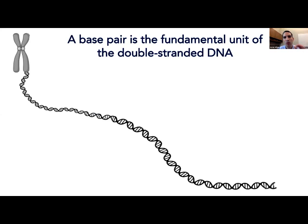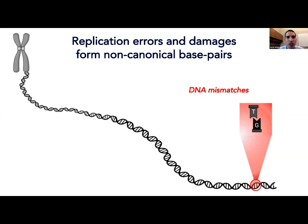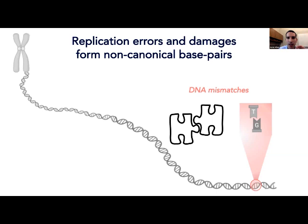What exactly is a mismatch? The fundamental units of double-stranded DNA are the canonical base pairs: A pairs with T and C pairs with G, and these pairs fit each other perfectly like two pieces of a puzzle. Mismatches are non-canonical base pairings which can occur due to replication errors and damages — for example, where G pairs with a T instead of a C. In these cases, the two bases do not fit each other. These mismatches put our genetic information at risk, and if left unrepaired, they can lead to mutations and genetic diseases.